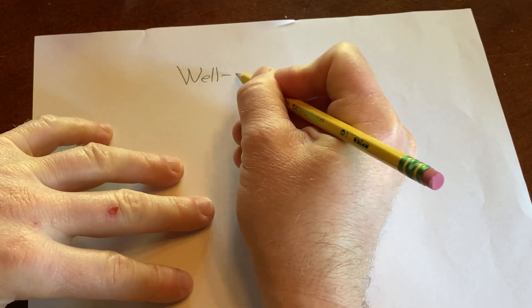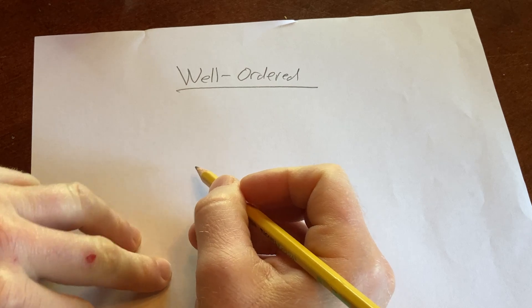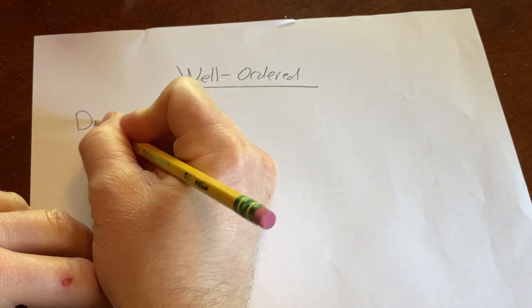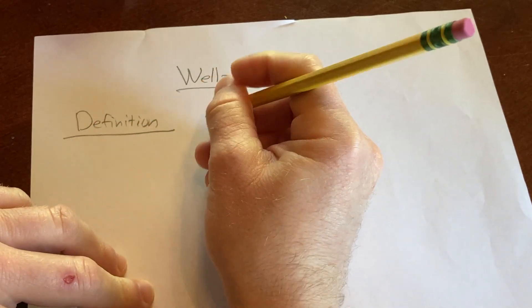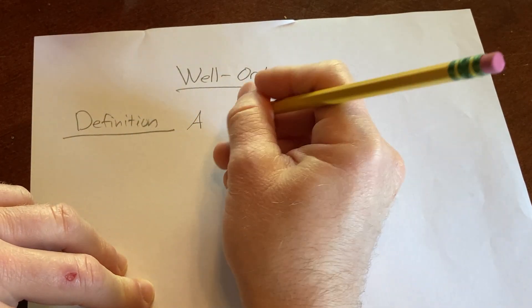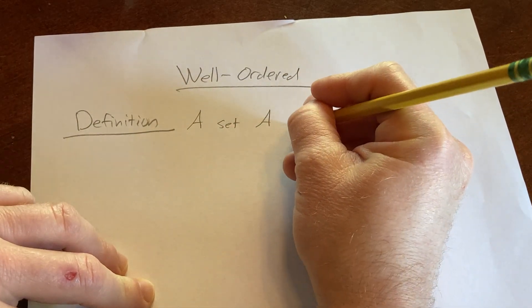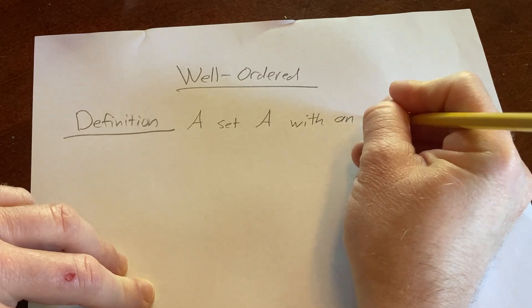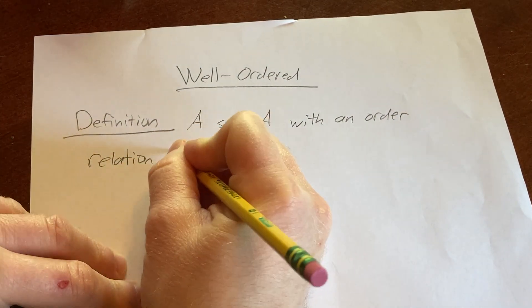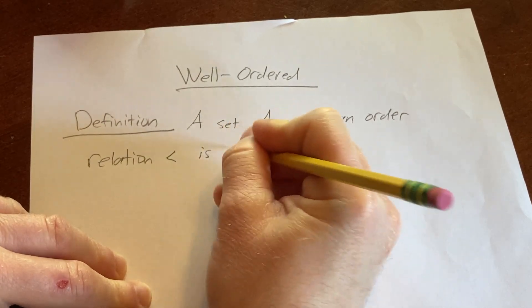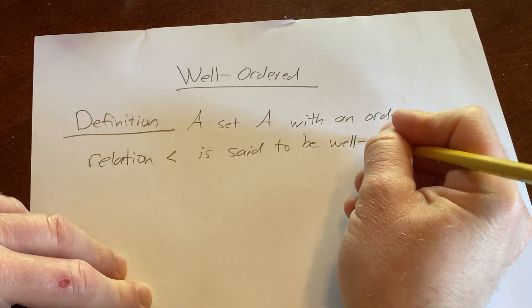So we're going to look at the definition of well-ordered. Definition: a set A with an order relation less than, is said to be well-ordered...